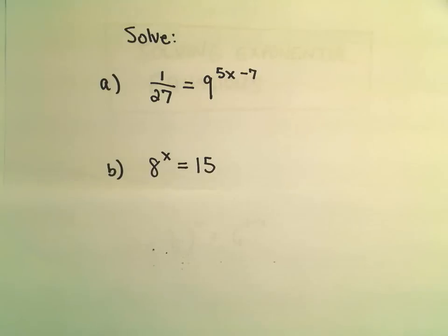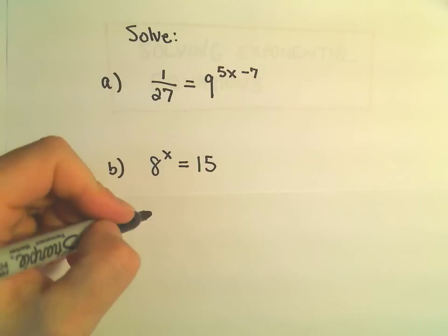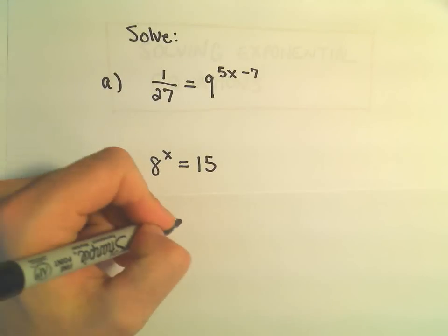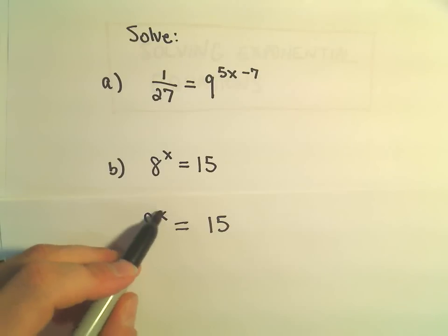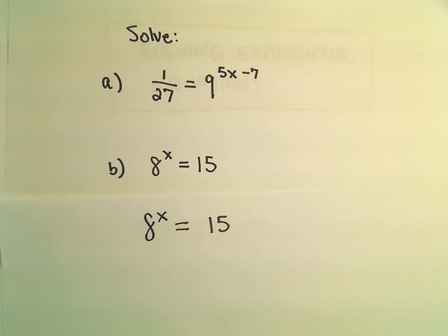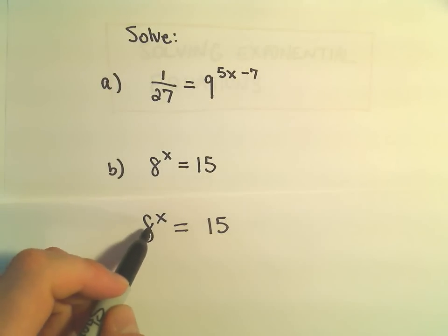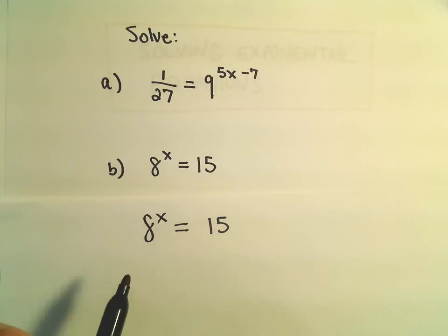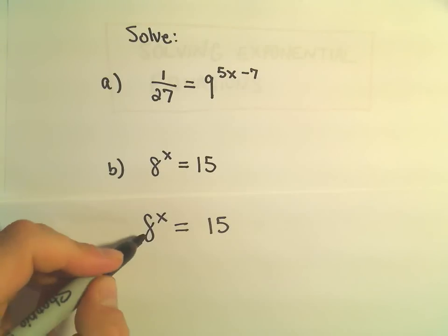However, if you look at the second example, 8^x equals 15 — I don't know how to write these with an equivalent base like we did in the last example. So what we do at this point is: I want to get x away from being the exponent. In general, this is an exponential function — you always want to think about what the inverse is, what undoes something. And the inverse of an exponential is a logarithm.